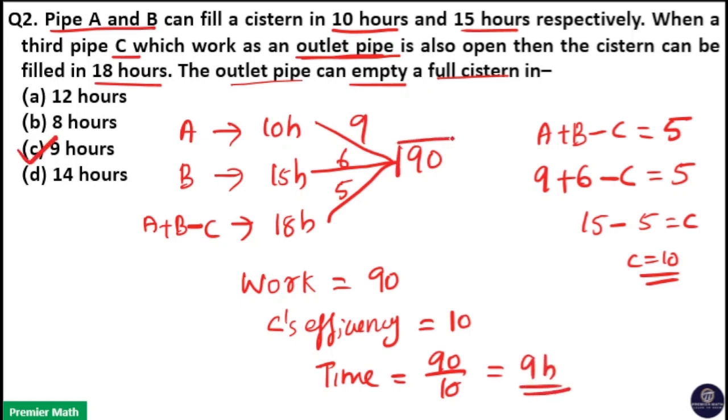That is, here full work is 90. So emptying 90 liters is full work. When C is emptying the 90 liters, if C's efficiency is 10, that means 90 divided by 10 is the time taken by C to empty this tank. So 9 hours is the time taken by C to empty this full cistern.